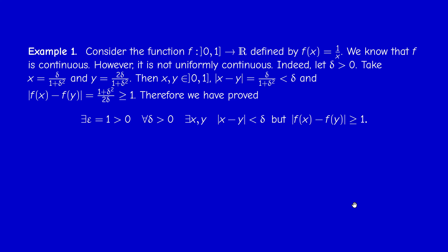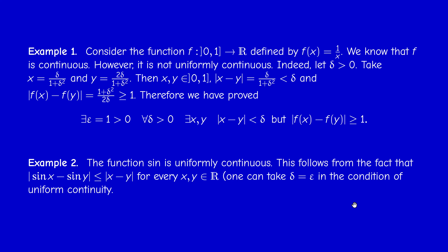Therefore, this function is not uniformly continuous. The function sine, however, is uniformly continuous. Why? Because of the fundamental inequality: |sin x − sin y| ≤ |x − y|. So we can take delta equal to epsilon in the uniform continuity condition. To prove this inequality, either factor it as 2 cosine sine and use the fact that sine and cosine are less than 1, or use the mean value theorem since the derivative of sine is cosine, which is less than 1. This is what we call a Lipschitz continuous function.